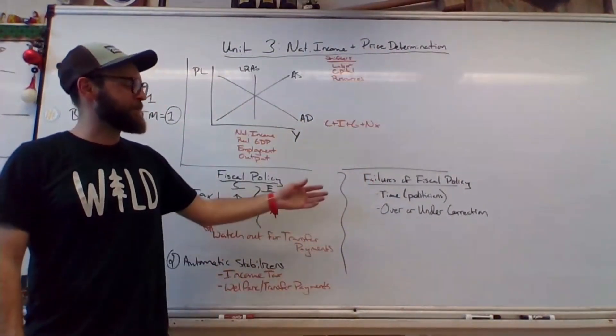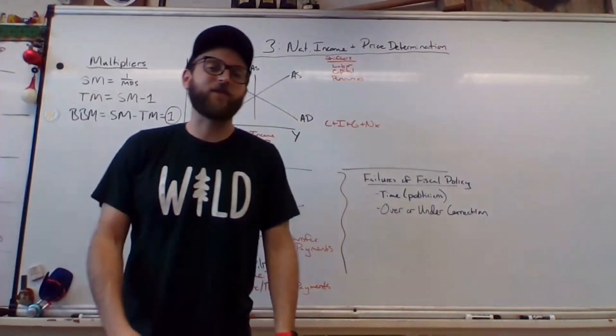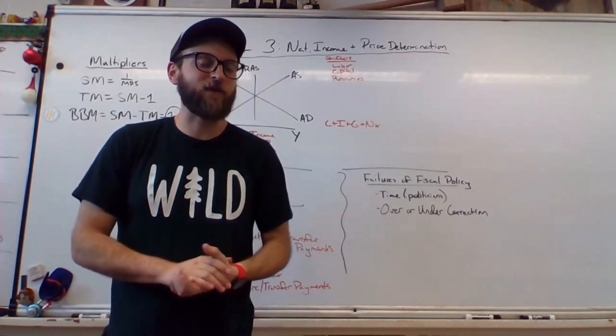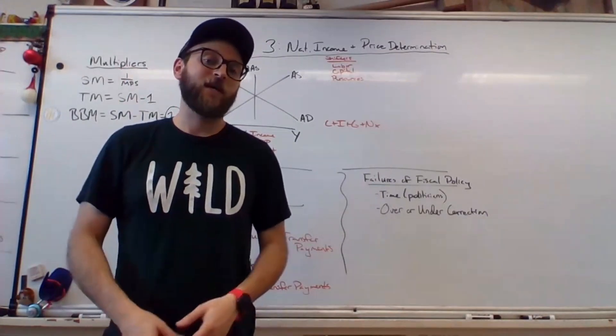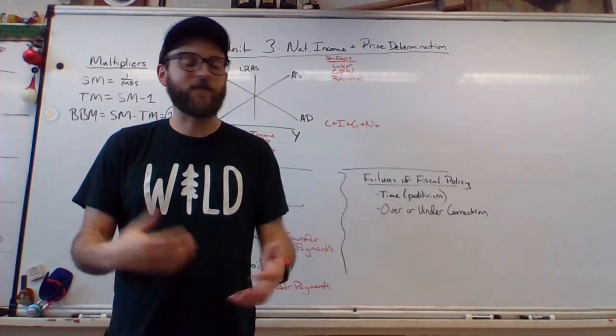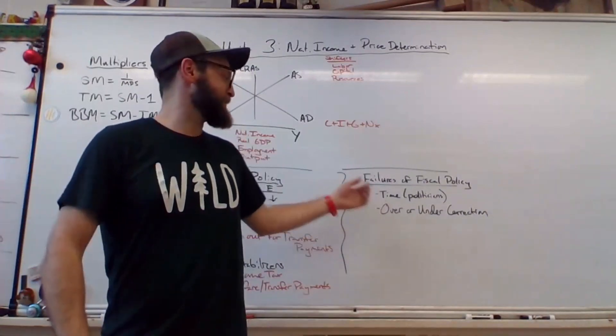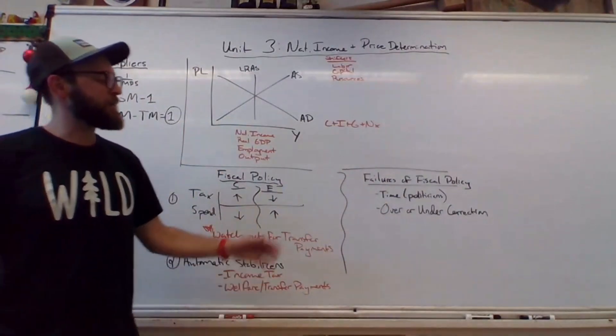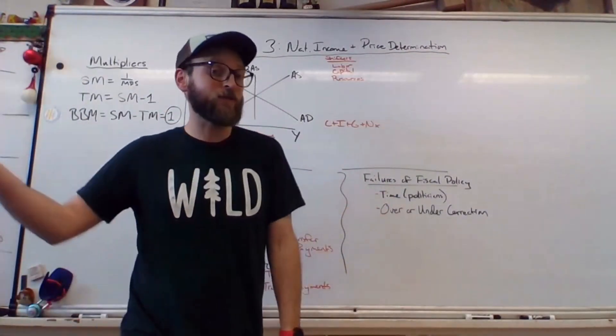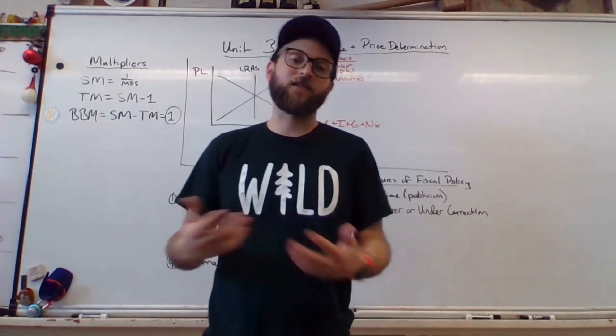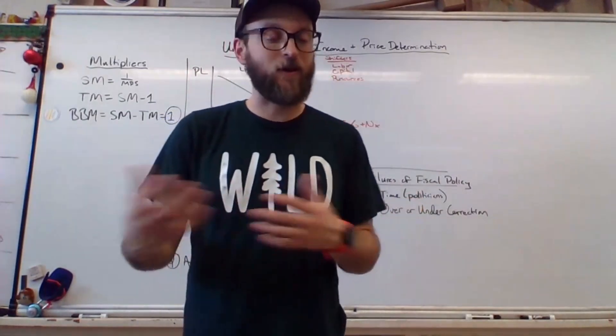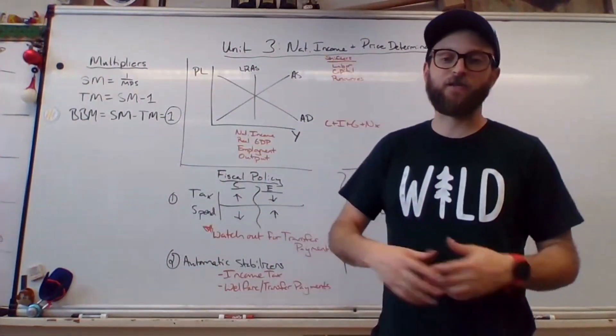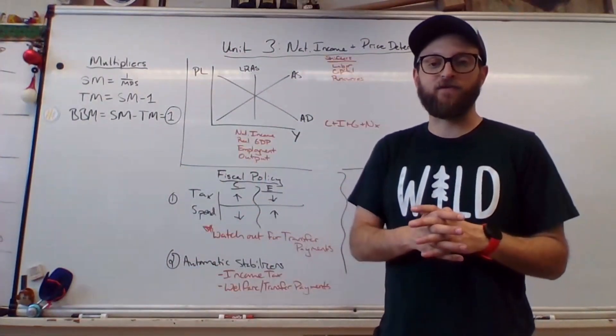Failures of fiscal policy. Number one, and I would say is the most common failure in the modern world, would be the time. It takes a long time for the government to do anything, especially in a divided government, especially at the state government level where Texas only meets like 90 days every two years. So it takes a while for politicians to actually pass legislation to do this stuff. And the other thing is, sometimes we over- or under-correct because of the multiplier effect. And the concern there is, if we over-correct or under-correct, then we're off full plan, and we have the same problem we had before. Cyclical issues, prices out of whack, Phillips curve drama, you get the gist.